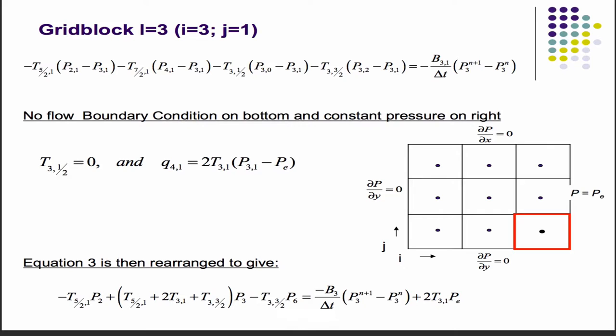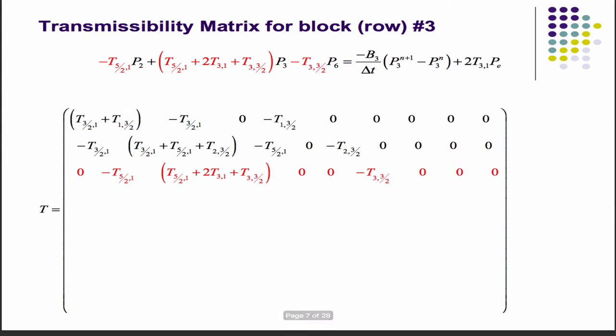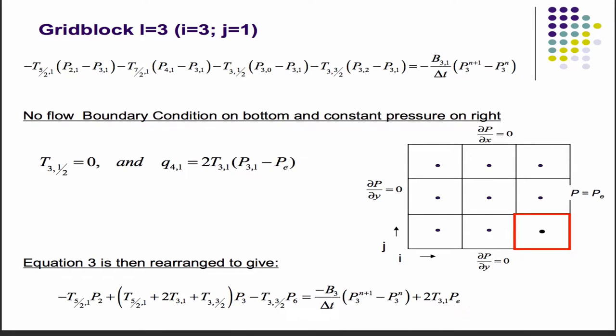For grid block three, you have a no flow here and a constant pressure boundary condition there. This is going to create an extra 2T because of that guy, because we write the flux between the center and the side, and that's over delta X over 2, so you get a 2T for that one. On the bottom, you have 3 a half is zero, so that's the total mass balance up there. Plug in these conditions and rearrange things, and you get this. We're not looking at the Q vector right now, but you would ultimately have a contribution due to the boundary condition in the Q vector.